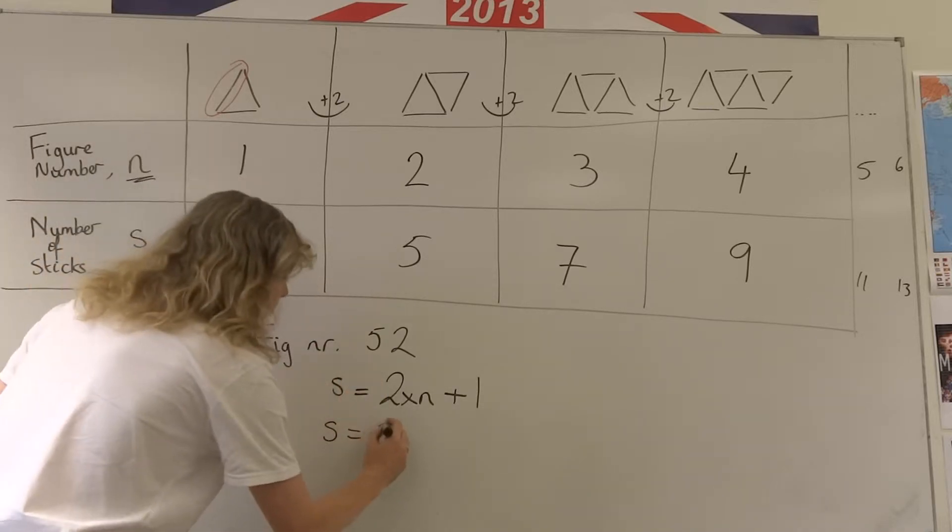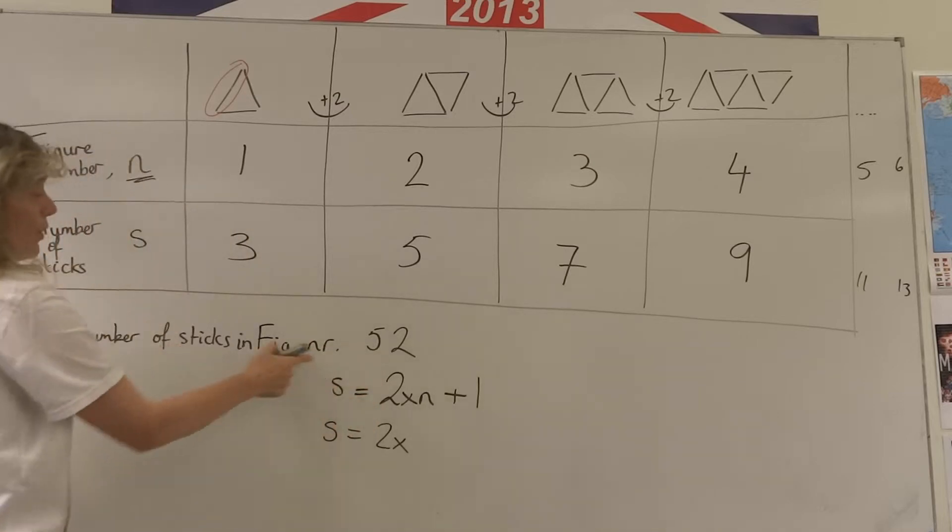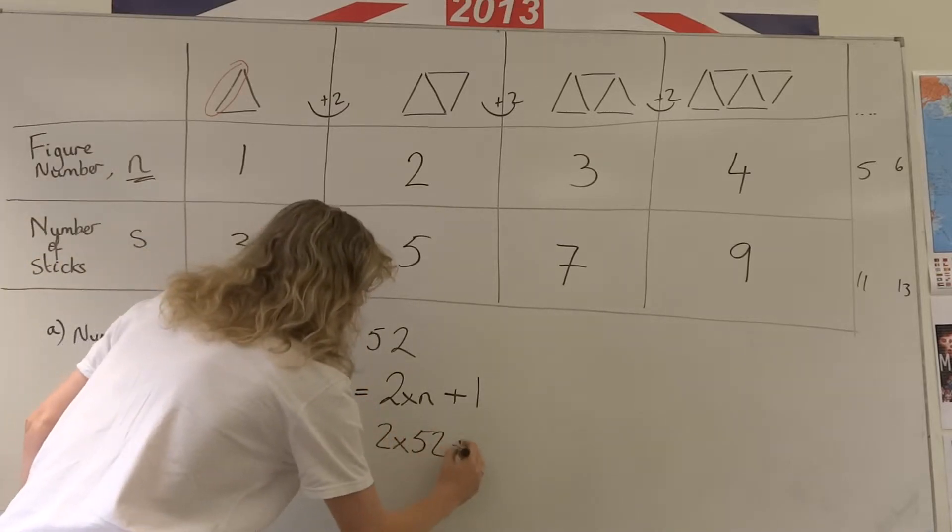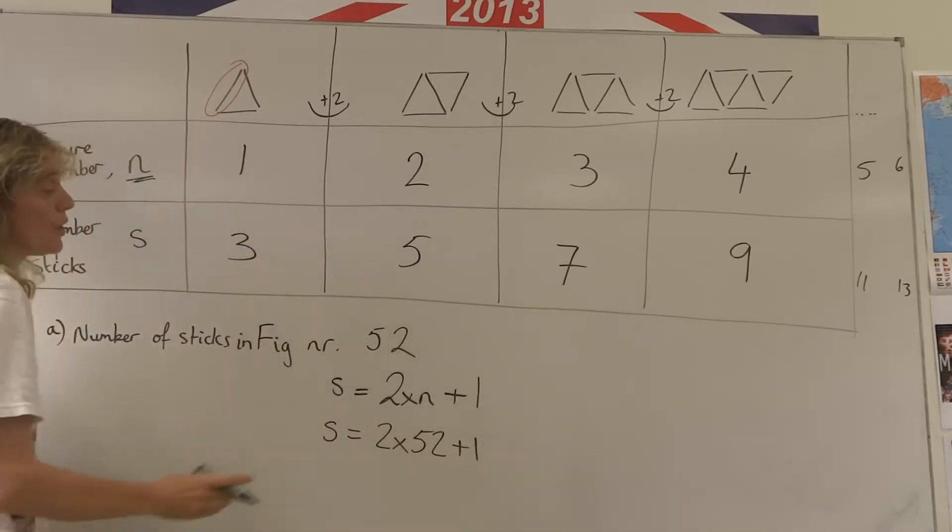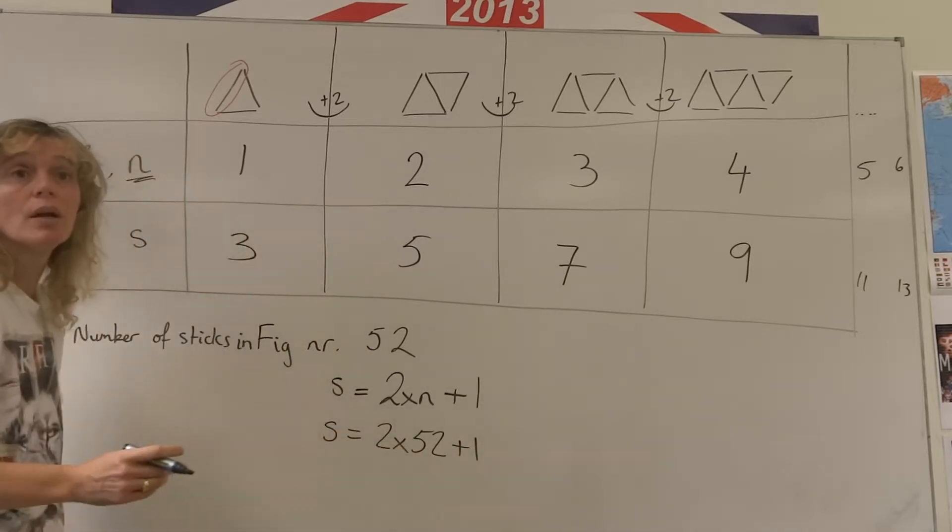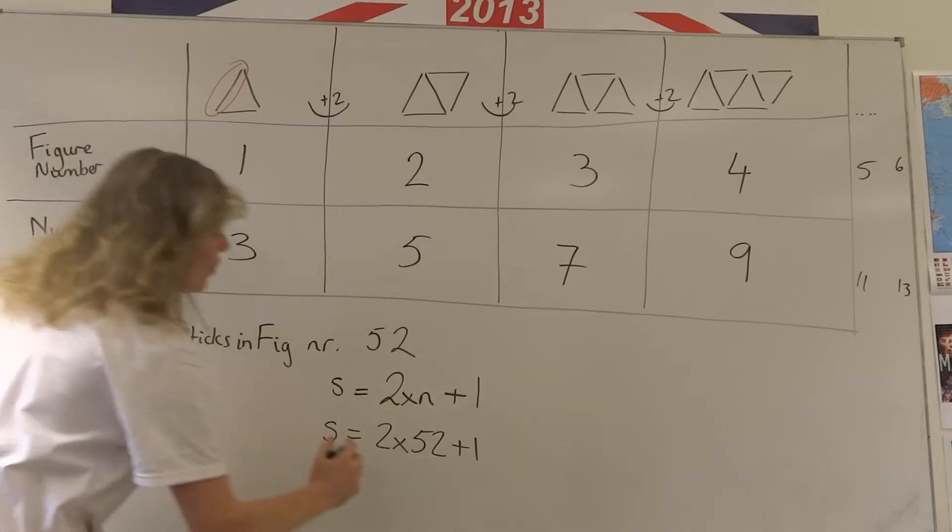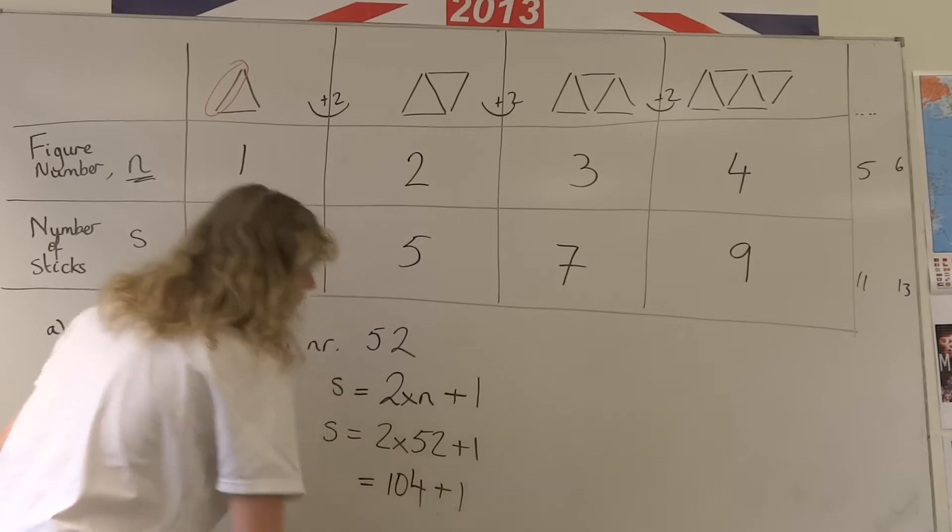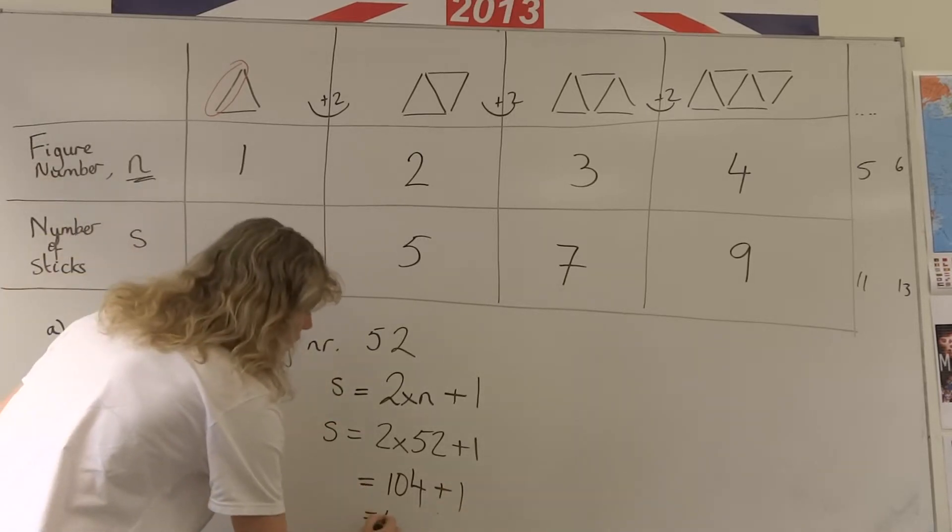Sticks is two times what n is, I know the n figure number is 52 plus one. 2 times 52 is 104 plus one, giving us 105.